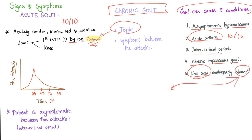Uric acid kidney stones form when the urine is acidic. Uric acid kidney stones are radiolucent — you cannot see them on x-ray. So how do you diagnose them? With renal ultrasound.